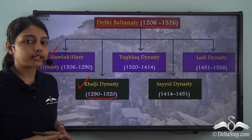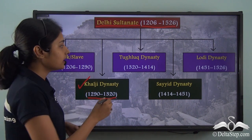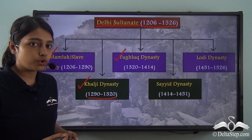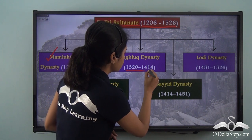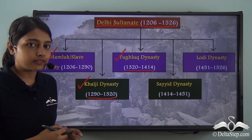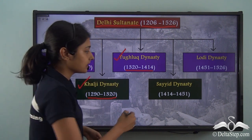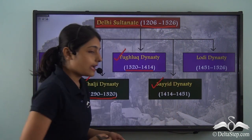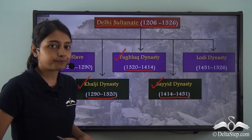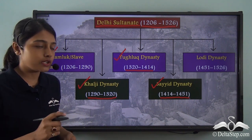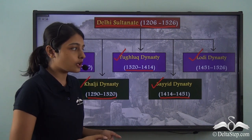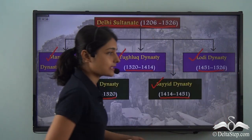After the Khalji or Khilji dynasty came the Tughlaq dynasty, which ruled from 1320 to 1414. The fourth dynasty under the Delhi Sultanate was the Sayyid dynasty, ruling from 1414 to 1451. Last but not the least was the Lodhi dynasty, which ruled from 1451 to 1526.